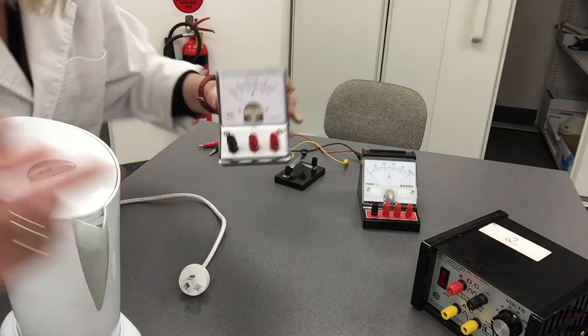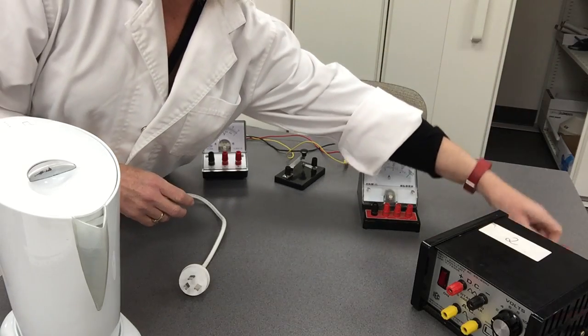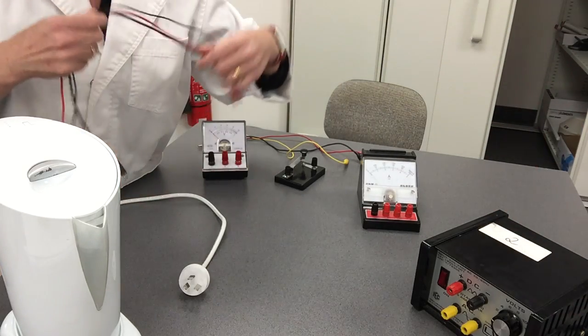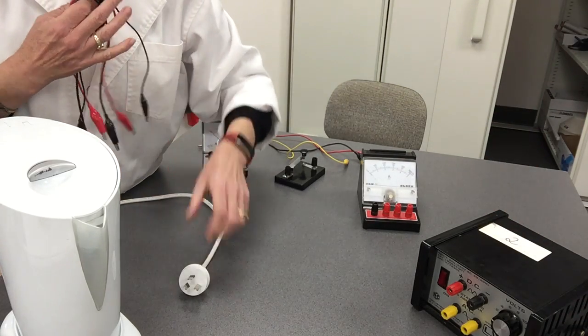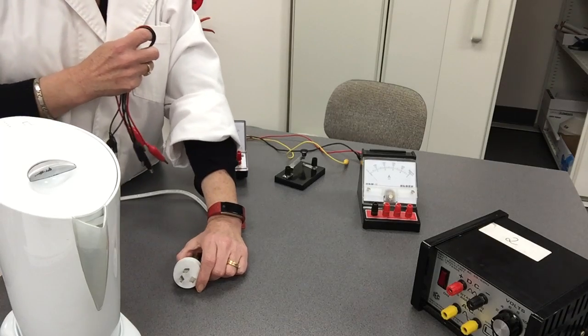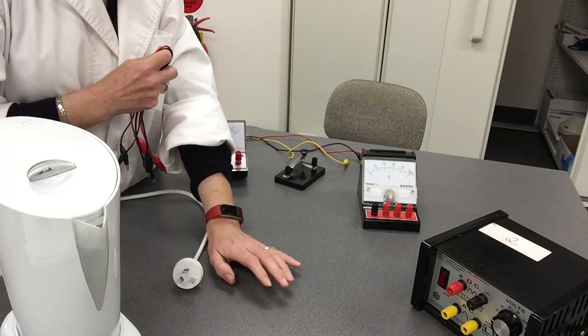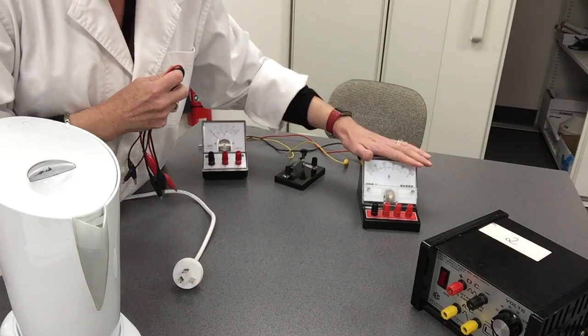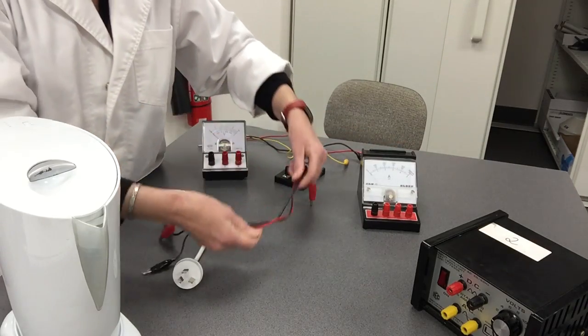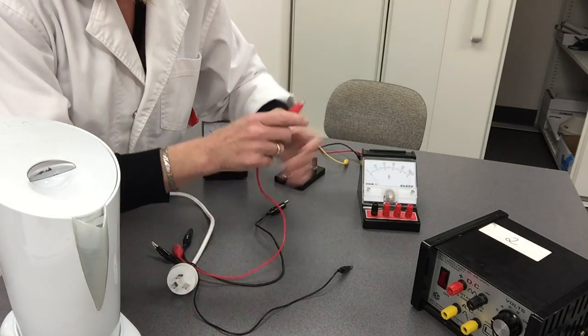First thing we need to do is set up our circuit through our kettle where we're going to be measuring current. Please remember that when you measure current, current must be connected in series, starting from our power pack.